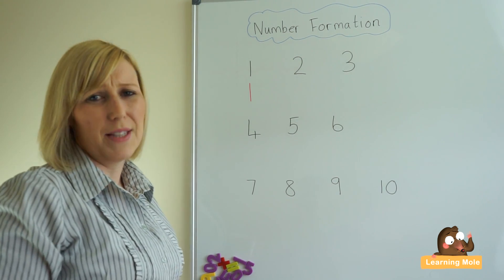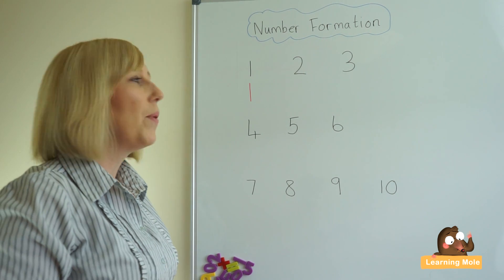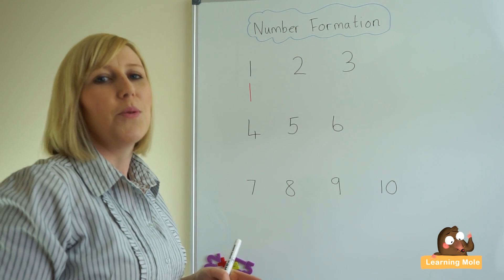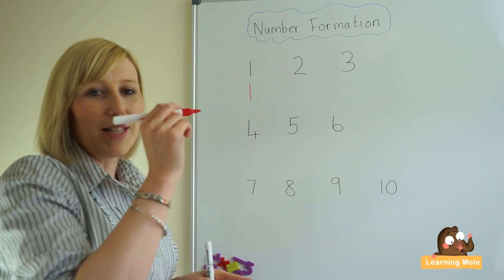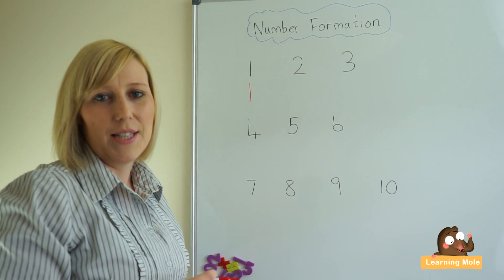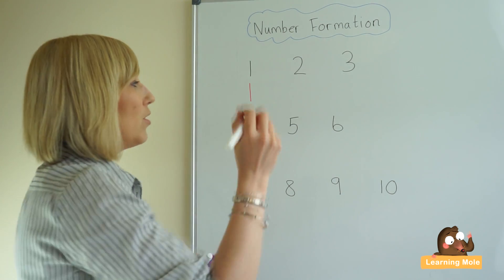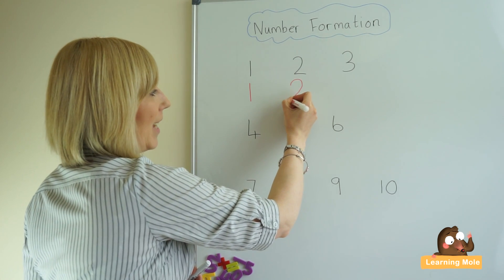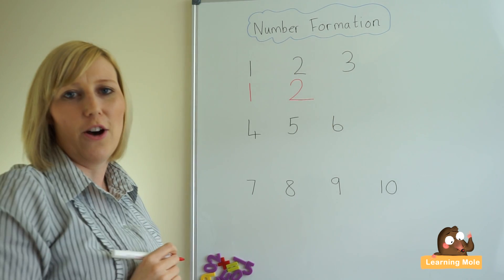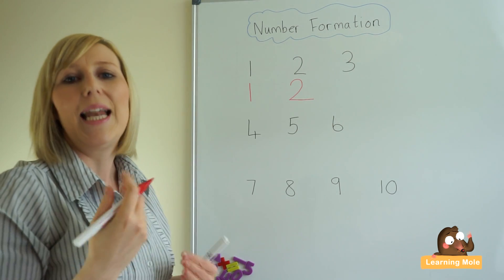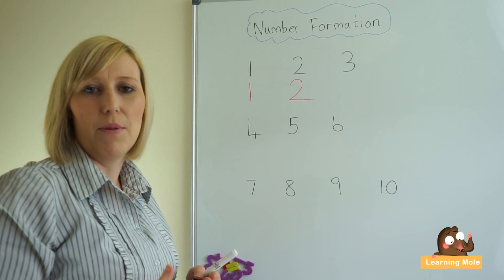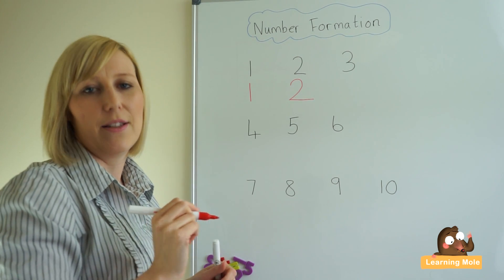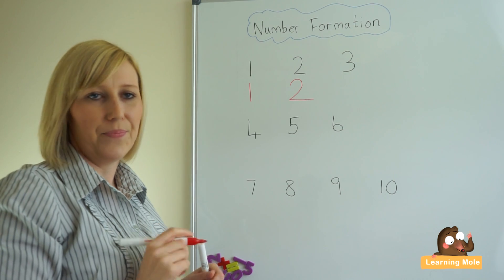Number two is obviously one of the more challenging ones, but we always talk about number two being like a little duck. We do the little duck's head and then we do the little duck's tail. Round like the little duck's head and his little tail sticking out. Just keep talking that through with your child — round like the little duck's head and the little tail sticking out.